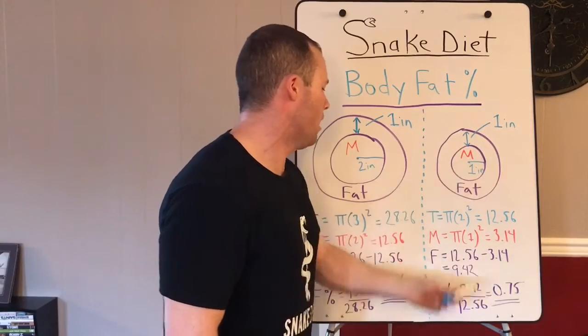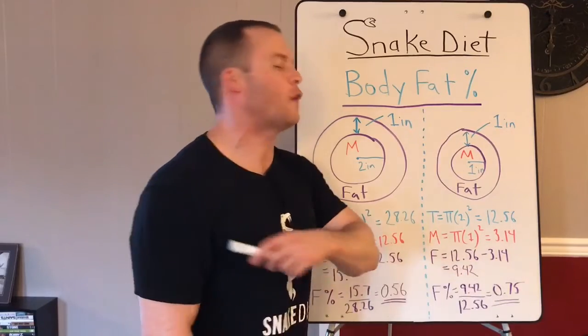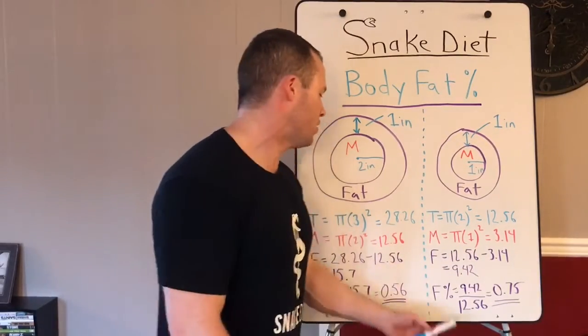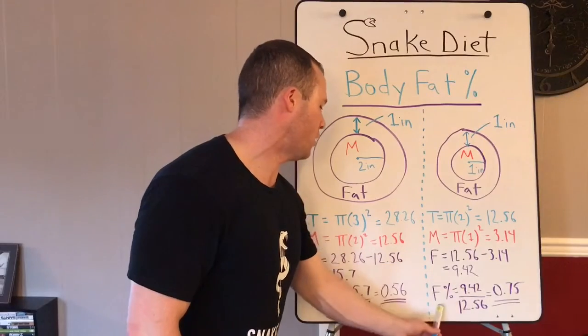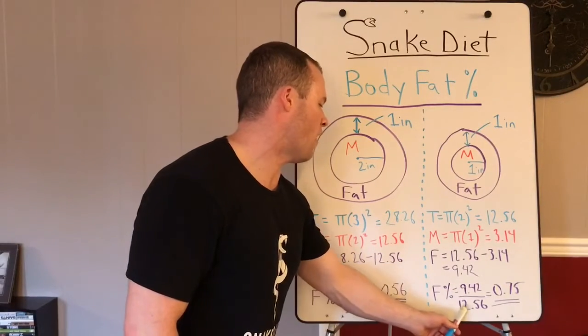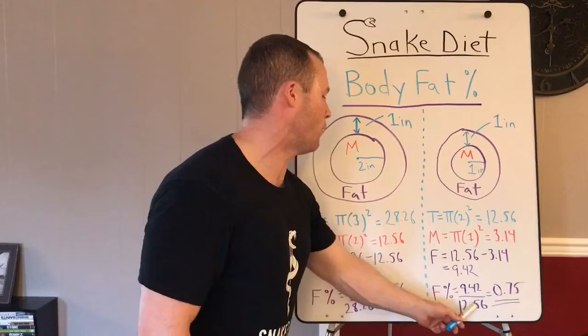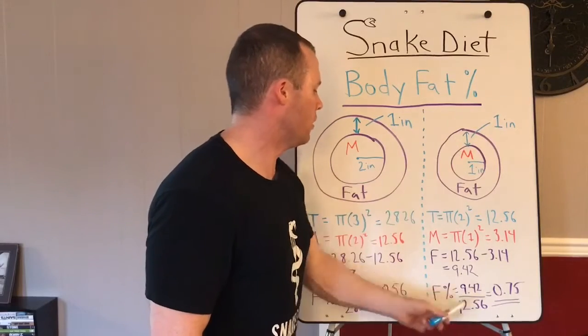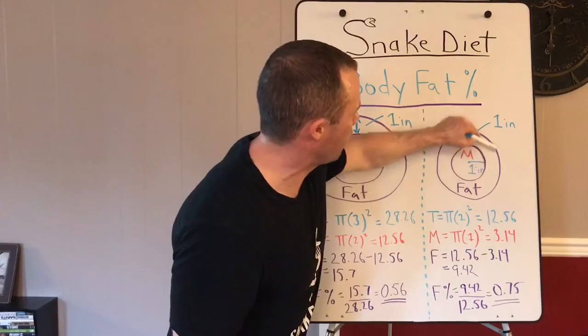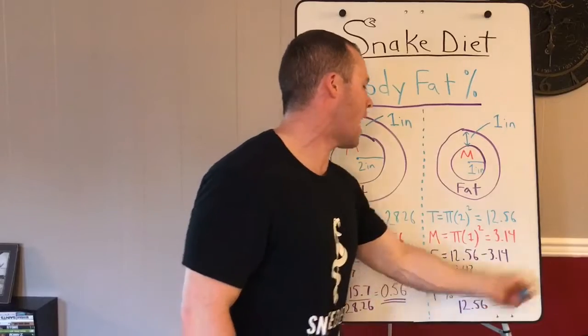Now to figure out the fat percentage we go 9.42 divided by 12.56 because the 12.56 is the area of the total and 9.42 is the area of the outer donut. Equals 0.75, seventy-five percent body fat.